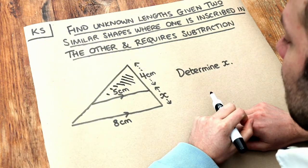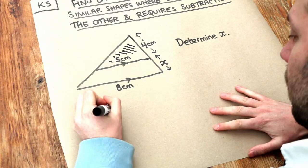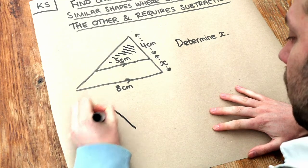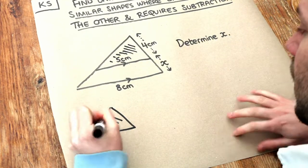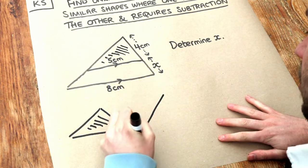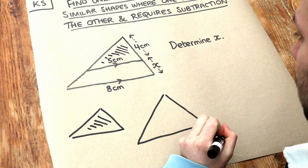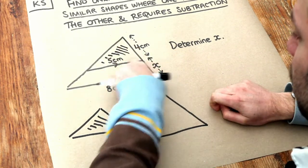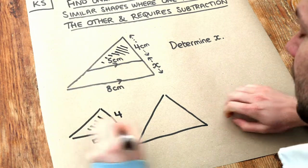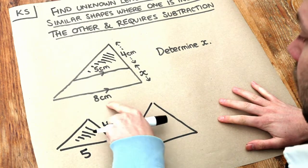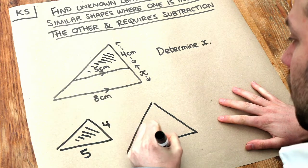Now, do you remember what the strategy was for inscribed triangles? We can draw out the separate triangles. We've got this smaller shaded one and the larger triangle. Let's put the lengths on that we know: for the smaller triangle we've got 4 here and 5 centimetres here, and for the larger triangle we've got 8 at the bottom.